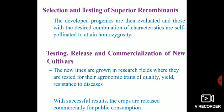The next step is selection and testing of superior recombinants. In this step, the developed progenies — the F1 progenies — are evaluated for the right combination of characters. Those with the desired combination are selected and self-pollinated to attain homozygosity.